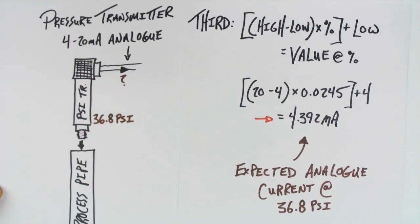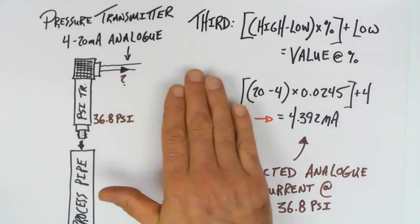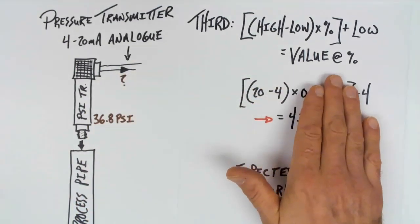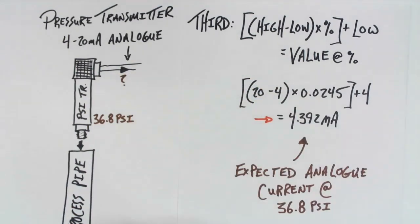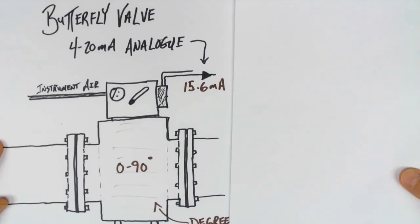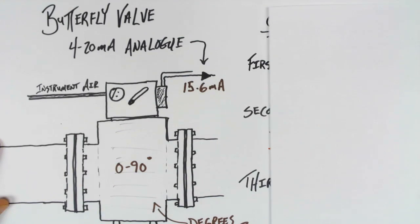Let's take a look at a different application. This was using a pressure transmitter, and we're assuming it's going to a PLC, so this signal here would actually be an input signal to my PLC. Let's take a look at a different type of scenario. This time, we're going to look at an output.